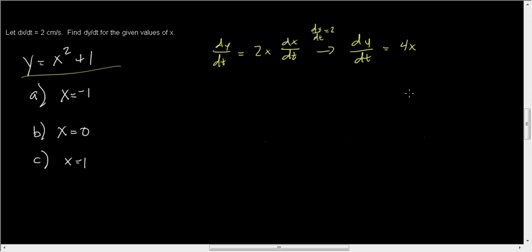Okay. So now all I have to do is plug in values of x. It's a beautiful thing. So dy/dt here is equal to 4 times negative 1, which is negative 4.